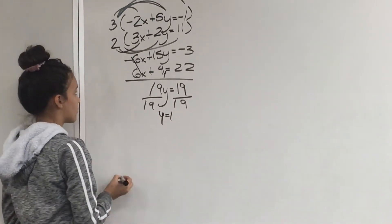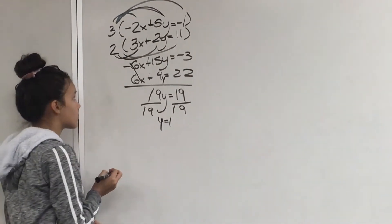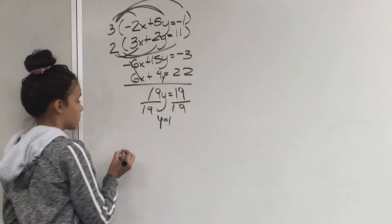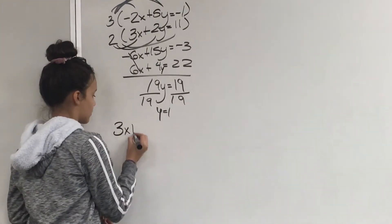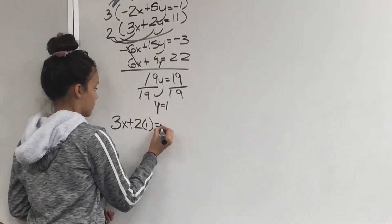Your last step is to plug the y into one of the equations. We will plug it into the bottom one, which would be 3x plus 2 times 1 equals 11.